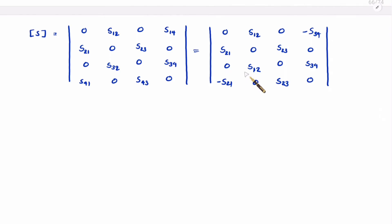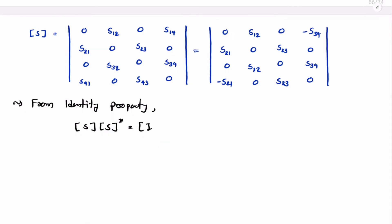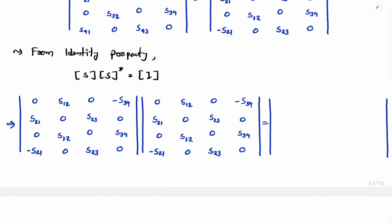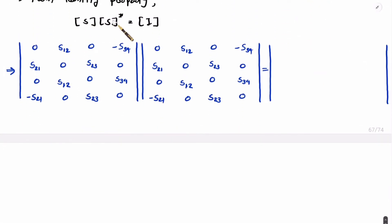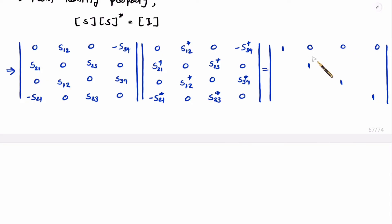Now using the identity property — S times S conjugate equals the identity matrix — we can find the values of the scattering elements. The simplified S matrix and its conjugate are multiplied; in the identity matrix the diagonal elements are 1 and all other elements are zero.